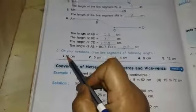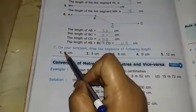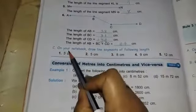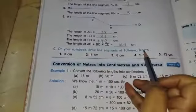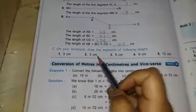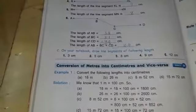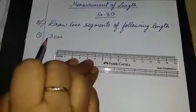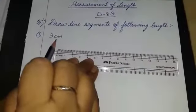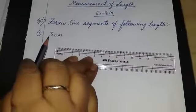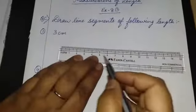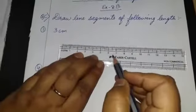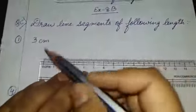Today we will start with question number C. The question given in your notebook is: draw line segments of the following lengths. This question we will do in the notebook. We will take 2 questions. The first question is 3 cm. Last class I told you how to draw lines using the scale, so we will do it in our copies.